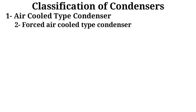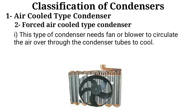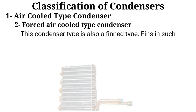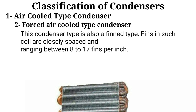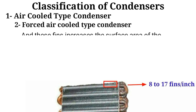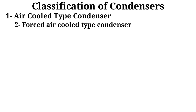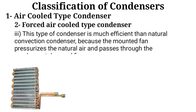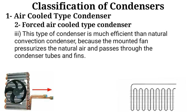Number two: the forced air-cooled condenser. This type of condenser uses a fan or blower to circulate air over and through the condenser tubes to cool. This condenser type is also a fin type, where fins in such coils are closely spaced, ranging between 8 to 17 fins per inch, increasing the surface area. This type is much more efficient than the natural convection condenser, because the mounted fan pressurizes the air which then passes through the condenser tubes and fins.